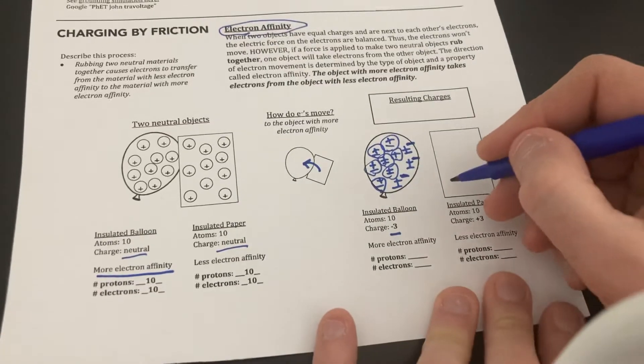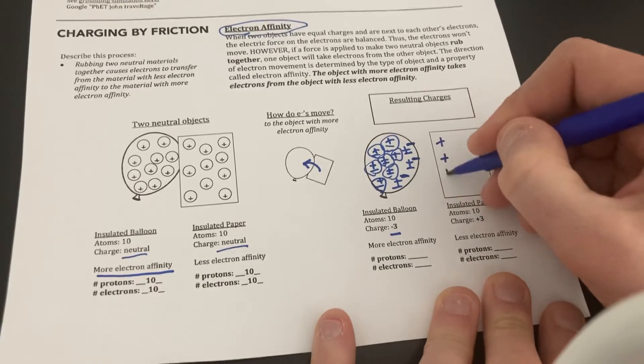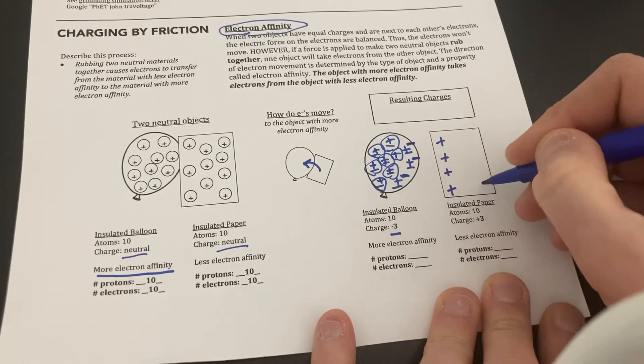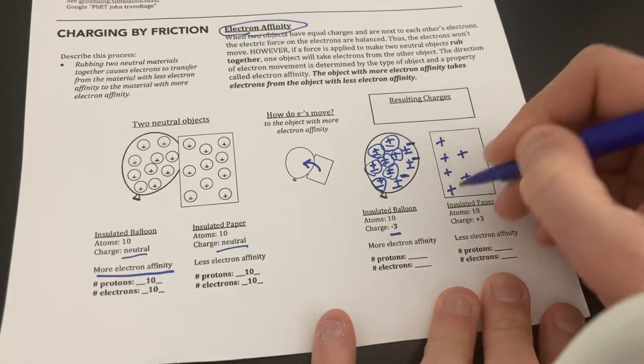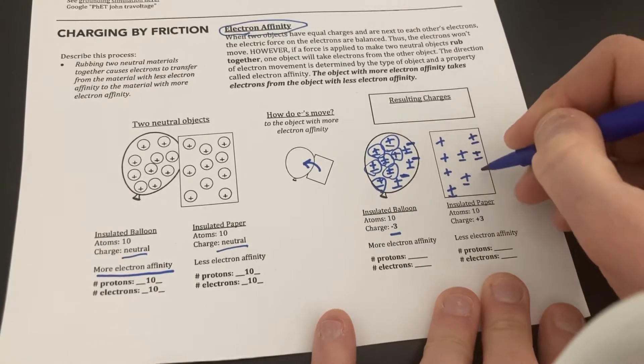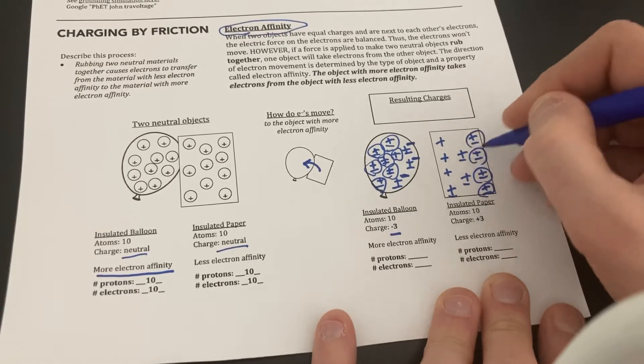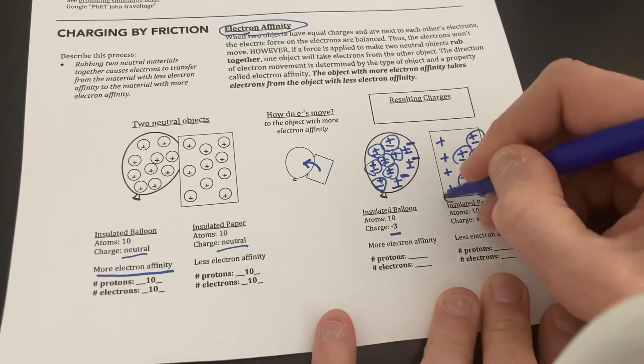And then over here, these three electrons left this object. So maybe one, two, three, these ones will stay positive. That's where the electrons had left before. And then I'm going to draw my other ones to be neutral. And still circle those.